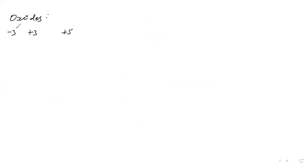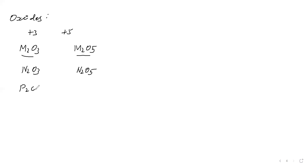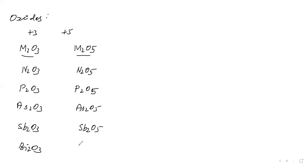Now we will see oxides of Group 5A elements. These elements form oxides in the +3 and +5 oxidation states. For nitrogen: N2O3 (trioxide) and N2O5 (pentoxide). For phosphorus: P2O3 and P2O5. For arsenic: As2O3 and As2O5. For antimony: Sb2O3 and Sb2O5. For bismuth: Bi2O3 and Bi2O5.